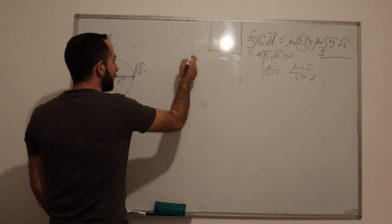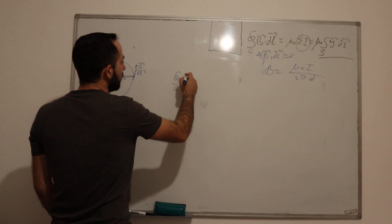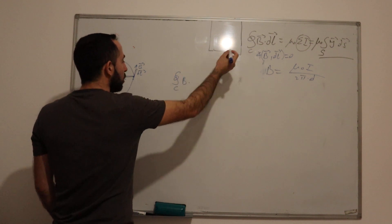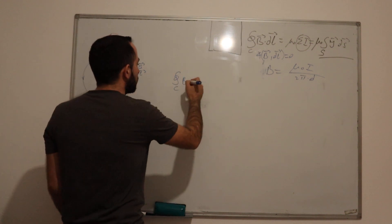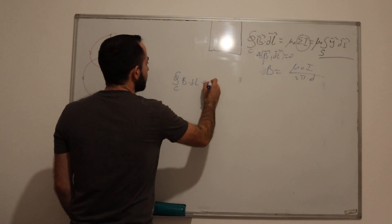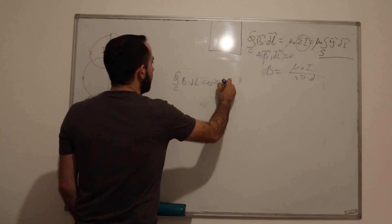Because now, when we put in the formula, we know that the dot product of two vectors is B times dL times cosine of the angle between these two.